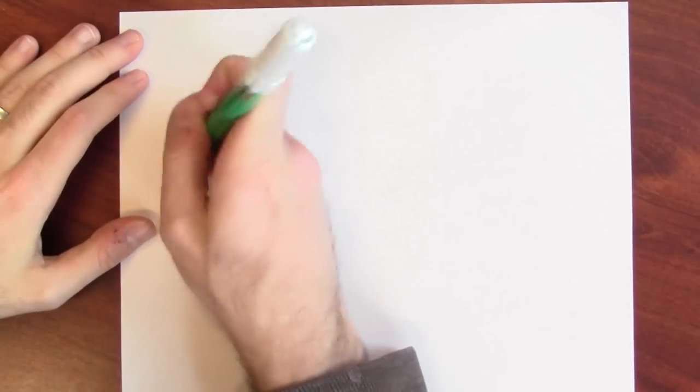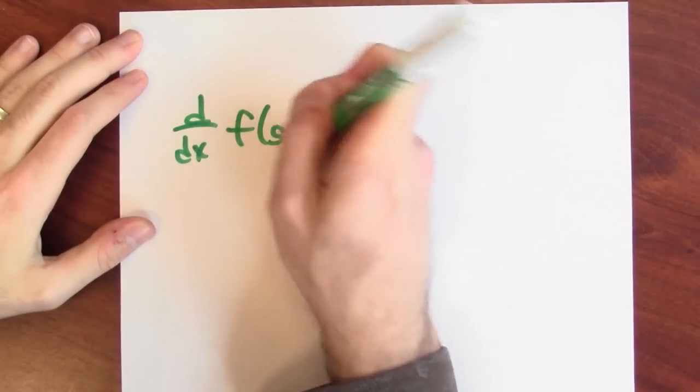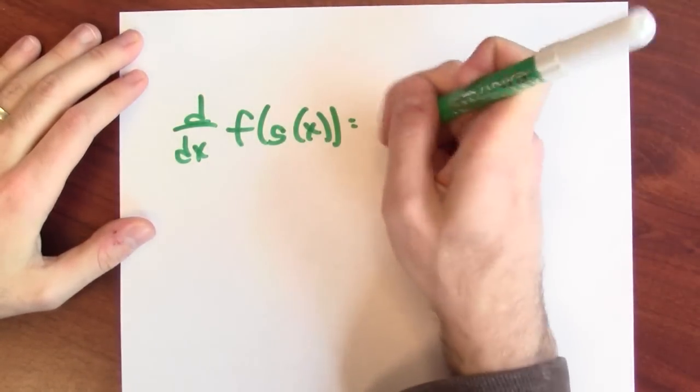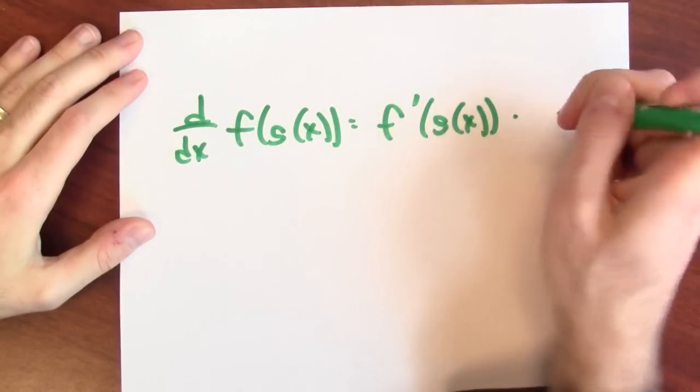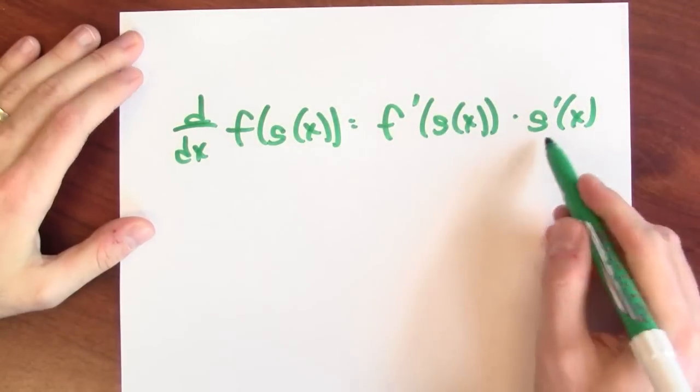That's just the chain rule. So let me just write down the chain rule. The derivative of f of g of x is the derivative of f at g of x times the derivative of g.